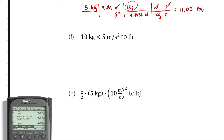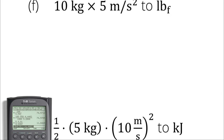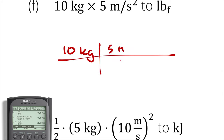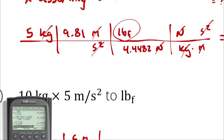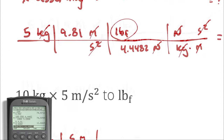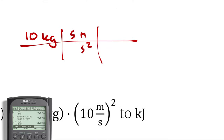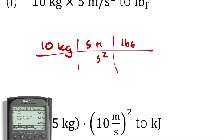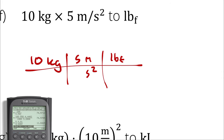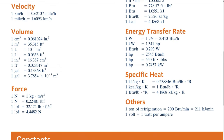For part F, we have kilograms times meters per second squared to pounds of force. I have mass times length divided by time squared — mass times acceleration — which yields something in the force dimension, so I have dimensional homogeneity. I can get to it: 10 kilograms multiplied by 5 meters per second squared. This unit conversion is ostensibly the same as the one above, but let's try it a different way — instead of converting pounds of force into newtons, let's try pounds of force into pound mass times feet per second squared.